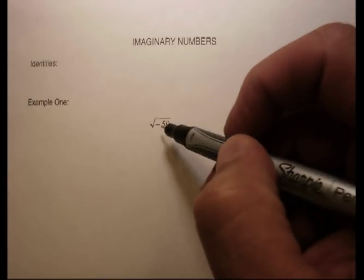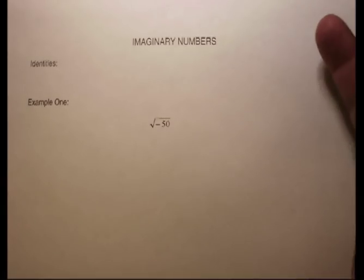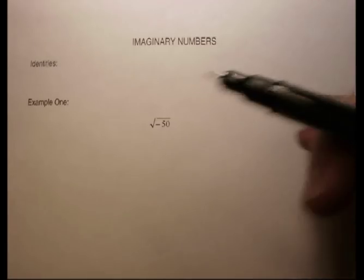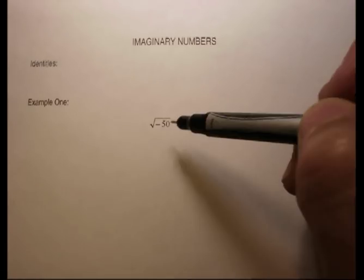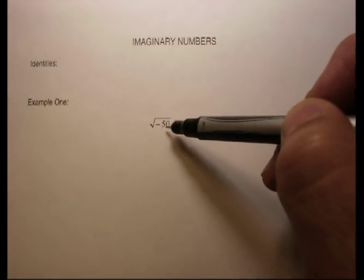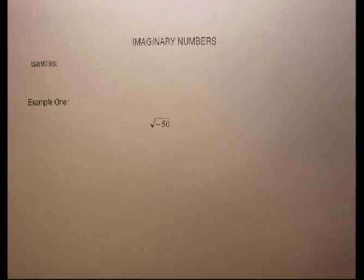So if I took the square root of 50, for example, I could find a real number that works. Remember, a real number appears on a number line. But the square root of negative 50 doesn't appear on the x-axis or on the number line.